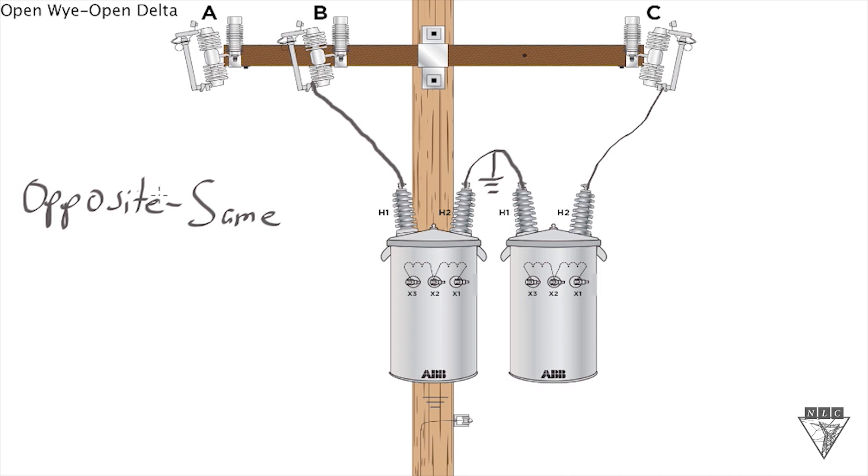So where we get the name opposite same, as far as the opposite part of it goes, is on this primary side, because we've connected the H2 bushing to the H1 bushing. So that's an opposite connection.